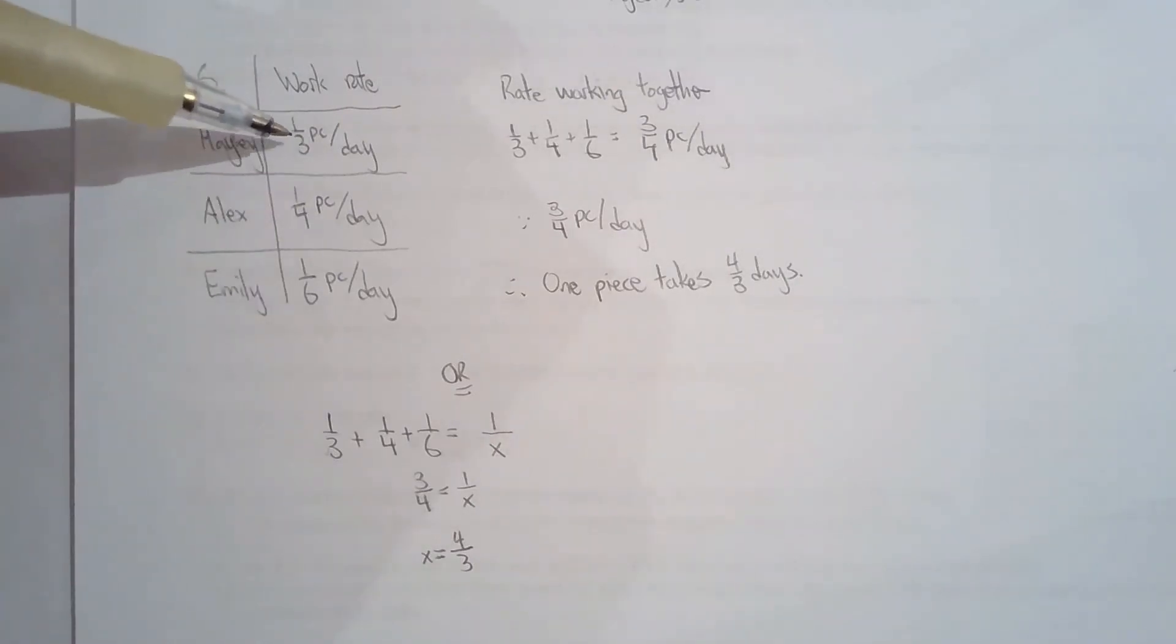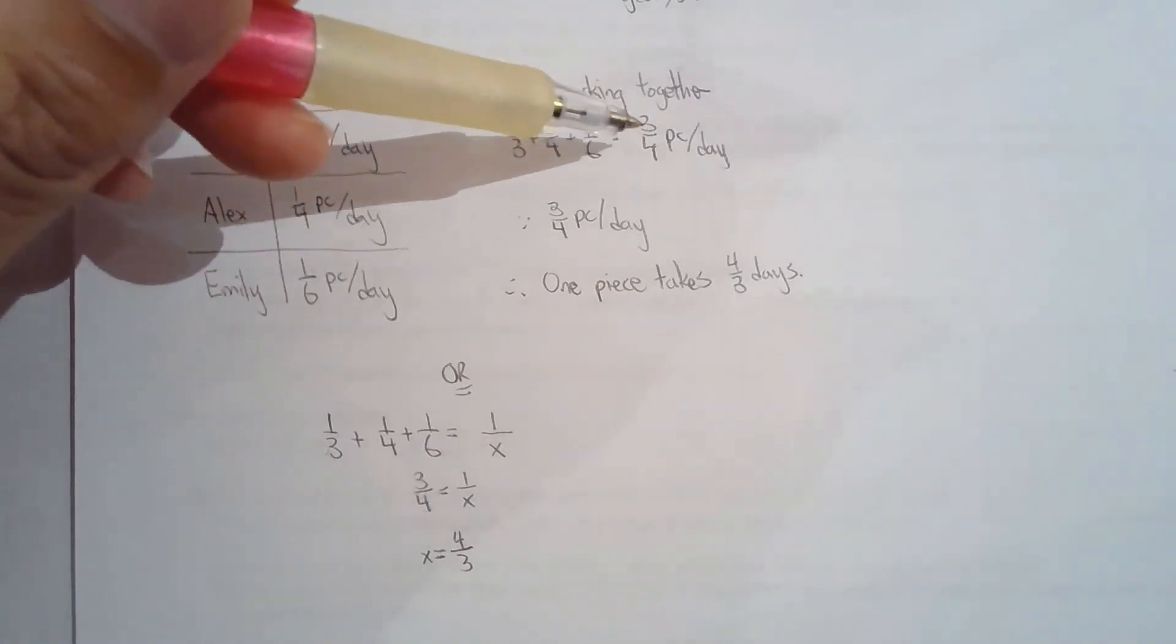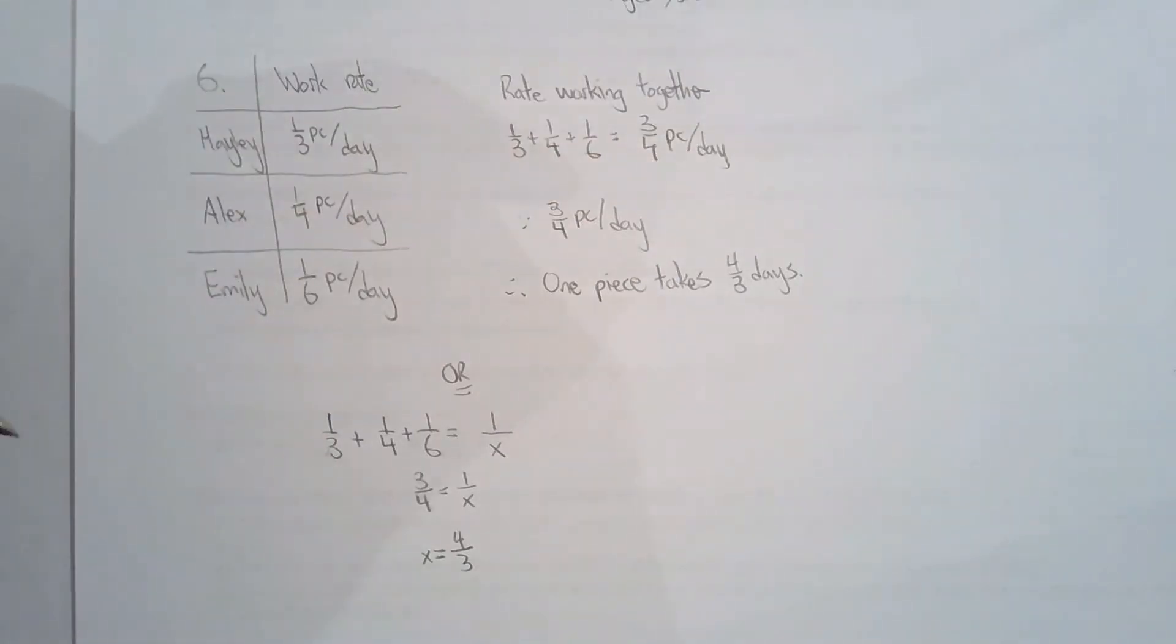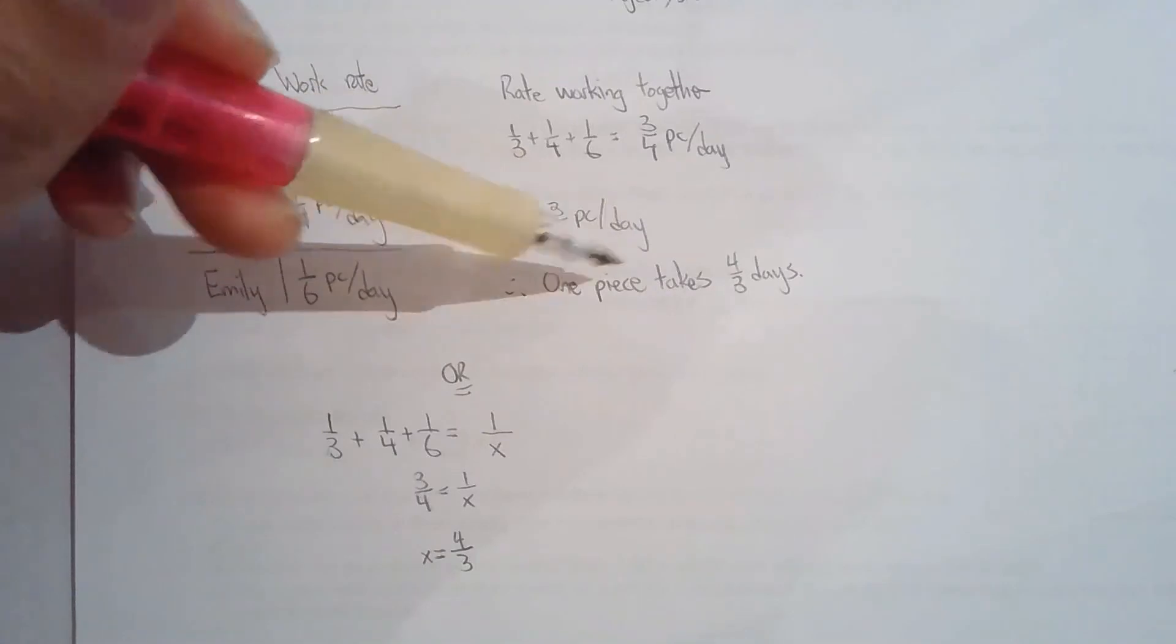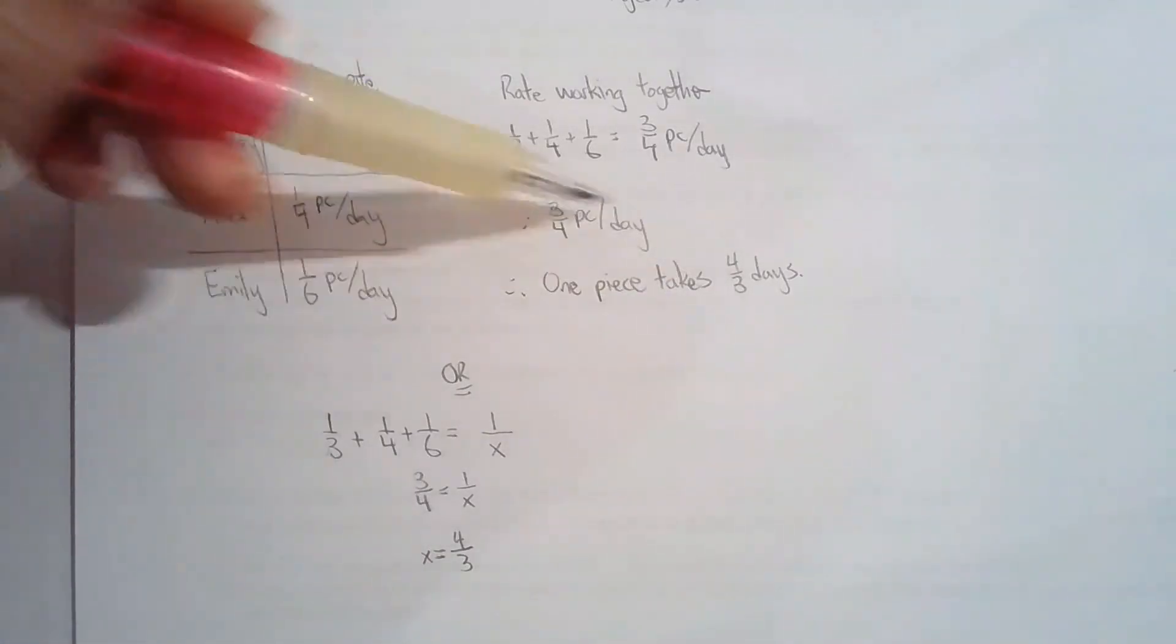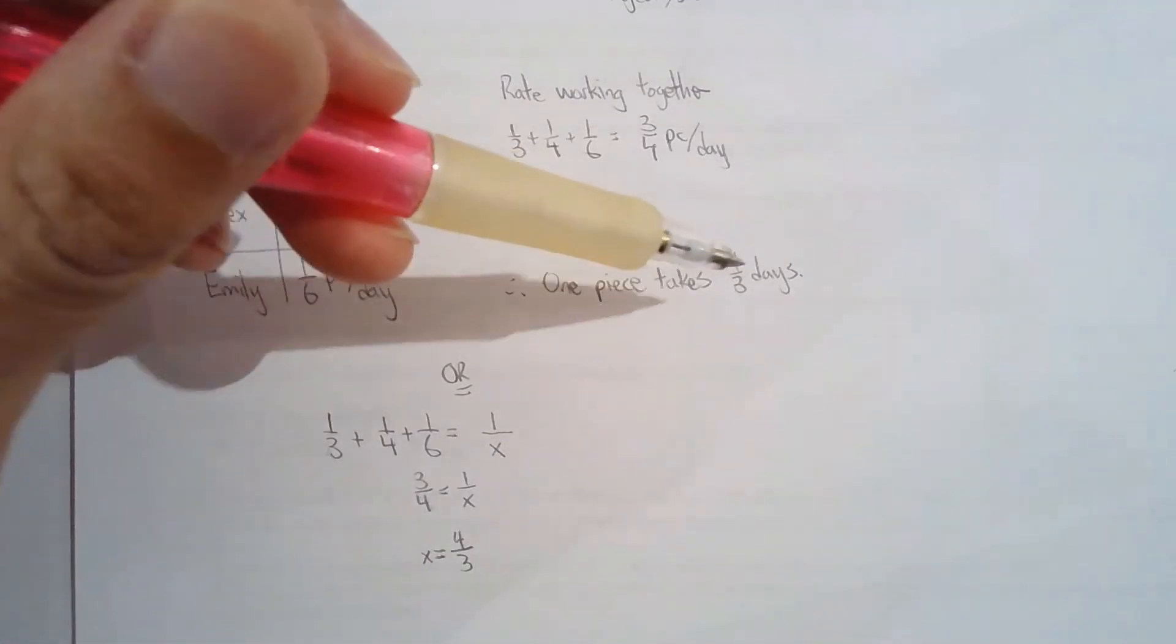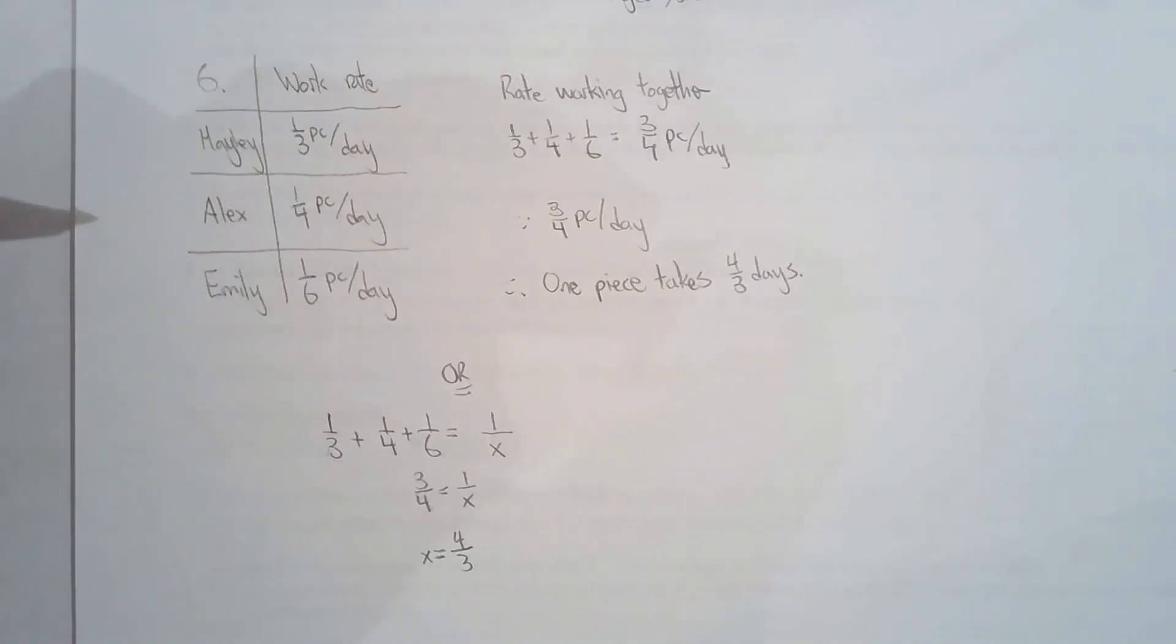If Haley finishes a third of the piece per day, Alex is finishing a quarter piece per day, and Emily finishes a sixth of the piece per day, then that means all together they can finish three-quarters of a piece per day. If they can finish three-quarters of a piece per day, then using that idea, it will take four-thirds of a day to finish one piece.